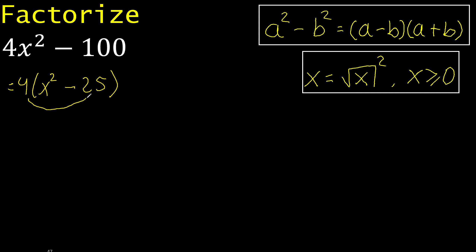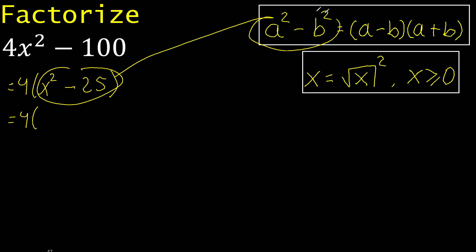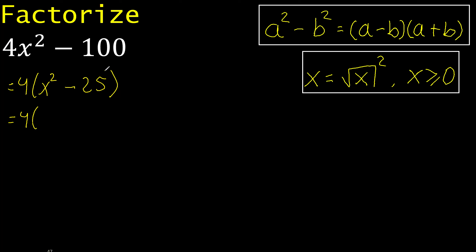4 multiplied by 25 is here. Like this, here there is not exponent 2.